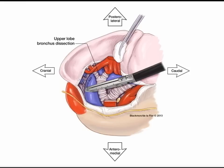The fissure can be divided from an anterior approach through the utility incision and is stapled and divided. The left upper lobe is placed into an endocatch bag and removed through the utility port.